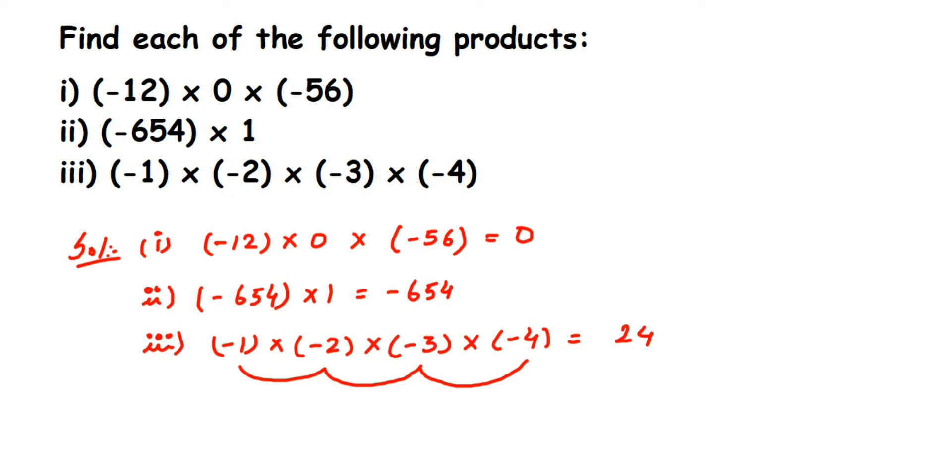We have 1, 2, 3, 4 negative signs. So 4 is an even number. If it's an even number, your final answer will be positive. You don't have to put a negative sign here. It's positive plus 24. If you have an odd number of negative signs, you have to put a negative sign here.